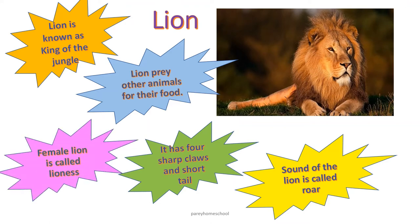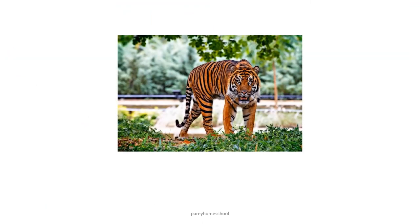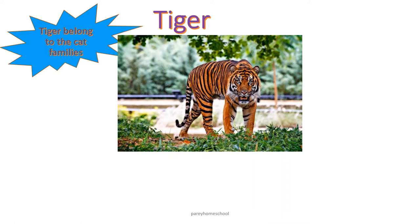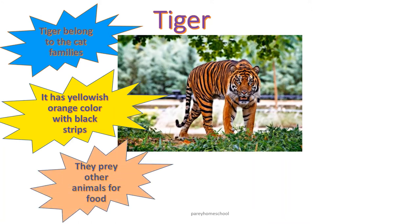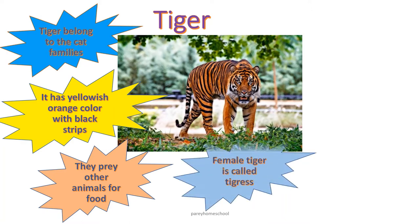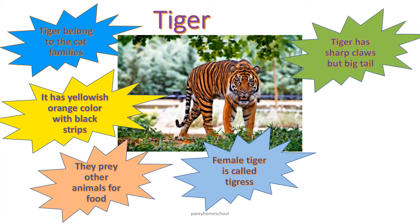Female lion is called lioness. Can you guess which animal is this? This is tiger. Tiger belongs to the cat family. It has yellowish orange color with black strips on its body. They prey on other animals for their food. Female tiger is called tigress. Tiger has sharp claws but a big tail.